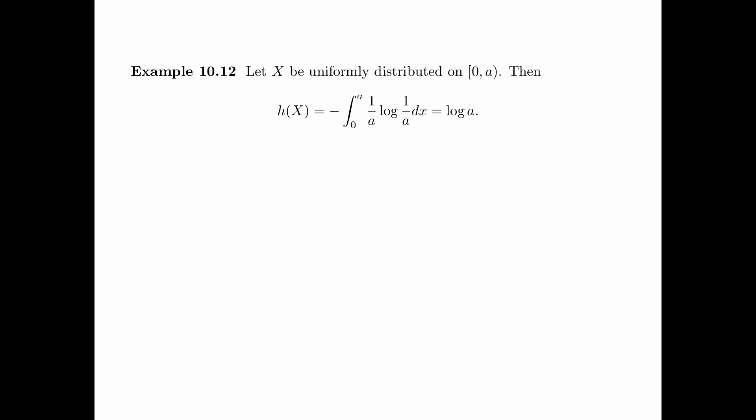In the next two examples, we evaluate the differential entropy for some specific distributions. In example 10.12, let x be uniformly distributed on the interval [0, a]. Then the differential entropy of x, which equals minus the integral from 0 to a of (1/a) log(1/a) dx, is equal to log a. Note that the differential entropy of x is negative if a is less than 1, so the differential entropy cannot possibly be a measure of information.